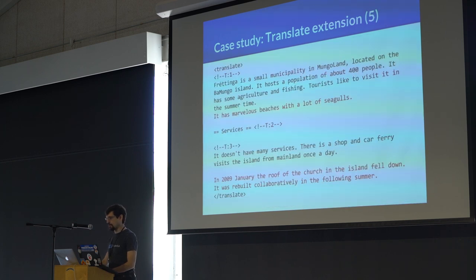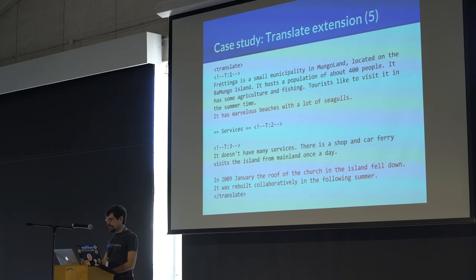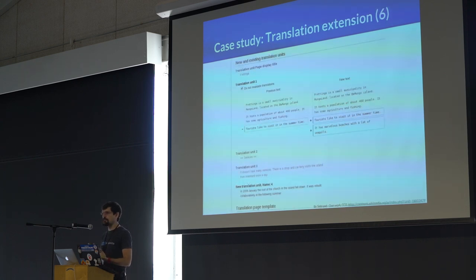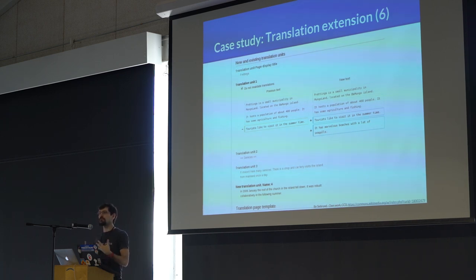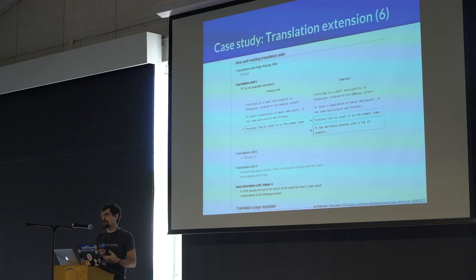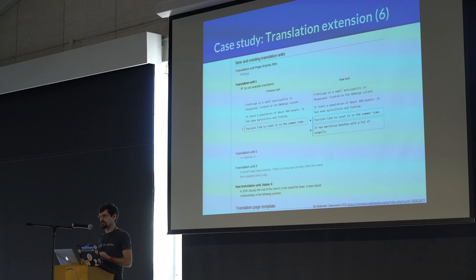Because it's Wikipedia, the original article quickly gets changed. Then we have a UI to migrate those changes to the new version of the article, including little details like: does this change actually invalidate the translation? Maybe it was just a copy editing change, fixing punctuation or something, and the original translation can be used.